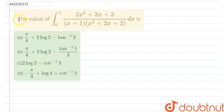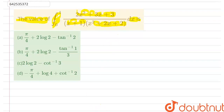For this question, we need to find the value of the integral. Integration from 0 to 1 of (2x² + 3x + 3) divided by (x + 1)(x² + 2x + 2) dx. So, let us denote this integral by I.